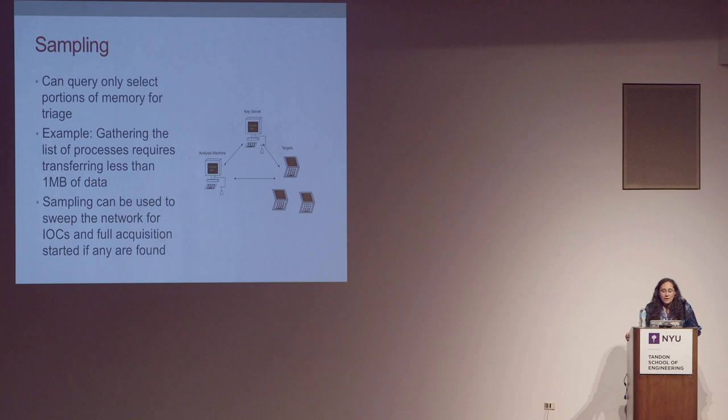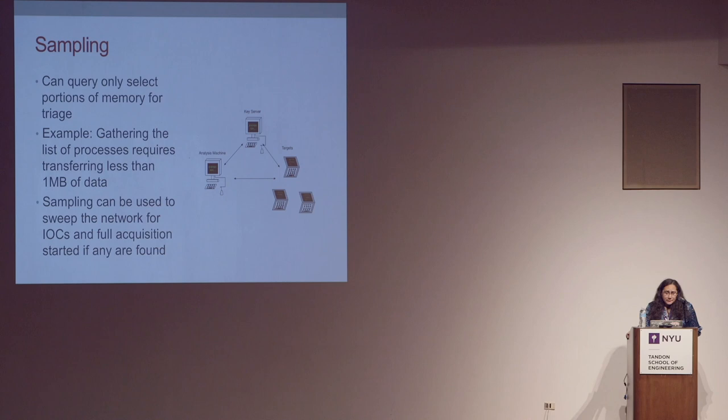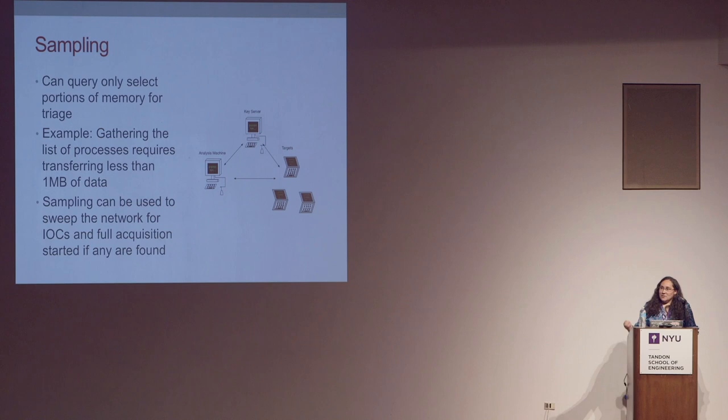I'm going to talk about this from an FResponse perspective because we've done this in the past working at a data center with lots of machines where we needed to sample them very quickly without crashing anything. With the sampling method you load a driver, look at the machine over the network, and pull back just the basic information you want — like the PS list, the running processes, or just the DLLs — and you get that information back over the network, allowing you to query across many enterprise machines.